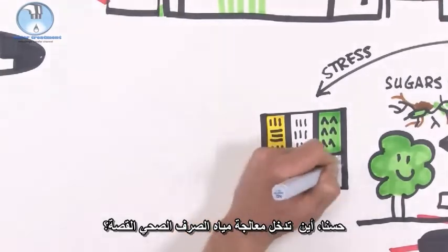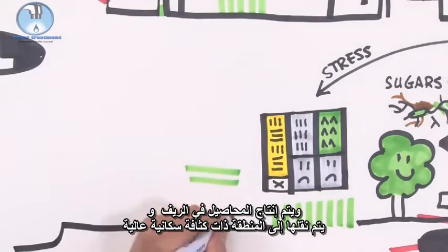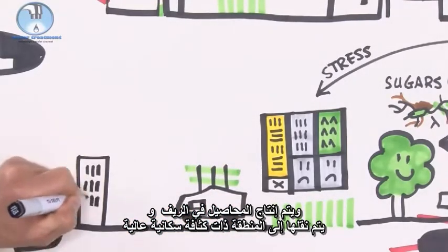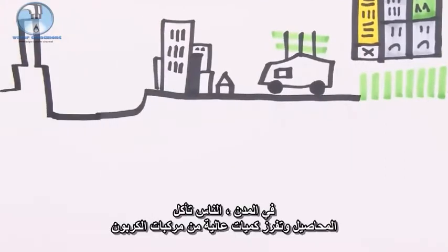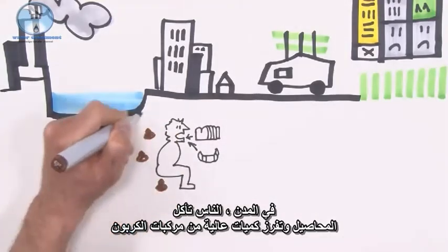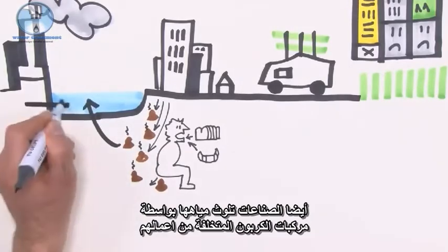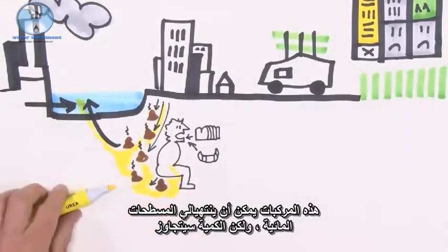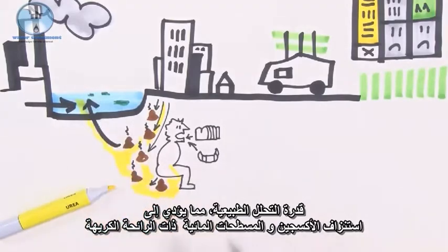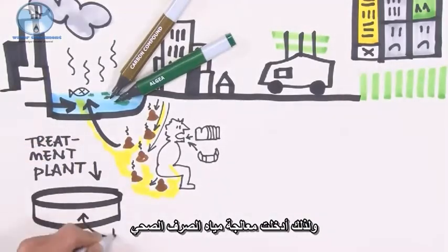Where does sewage treatment enter the story? That is to solve a local imbalance in this carbon cycle. Crops are produced in the countryside and transported to a densely populated area — cities. In the cities, people process and eat the crops and excrete high amounts of carbon compounds. Also industries pollute their waters with carbon compounds left over from their process. These compounds could end up in the surface water, but the amount would exceed the natural degradation capacity, leading to oxygen-depleted, smelly water bodies. Therefore wastewater treatment is introduced.